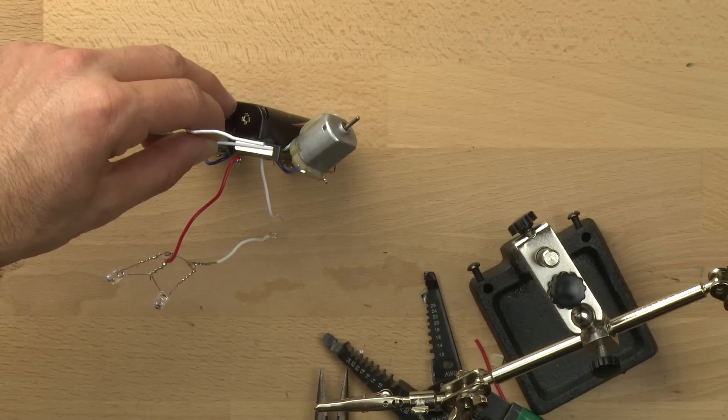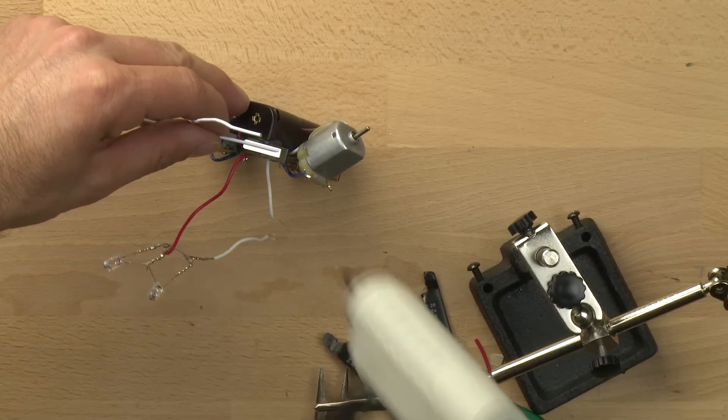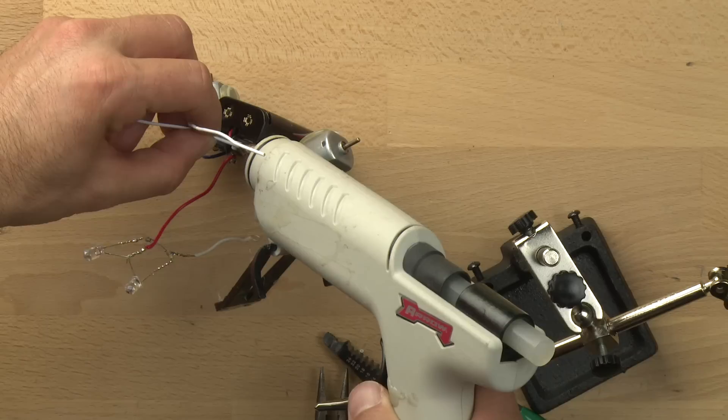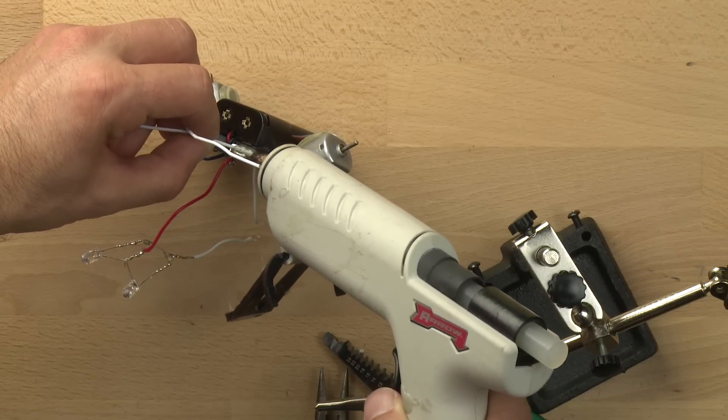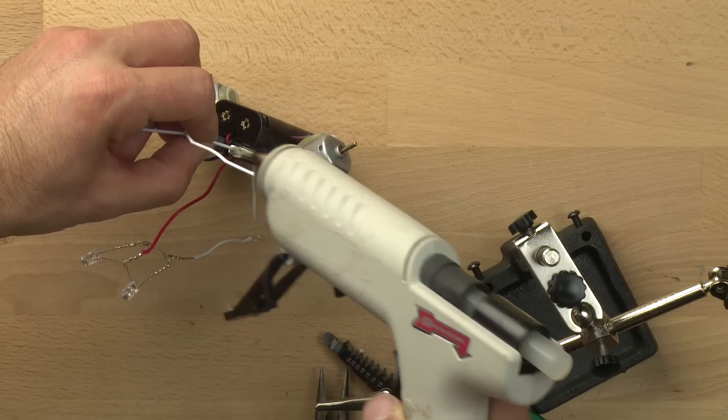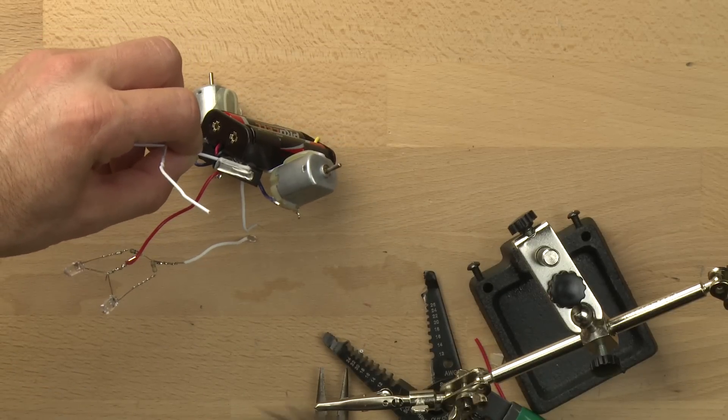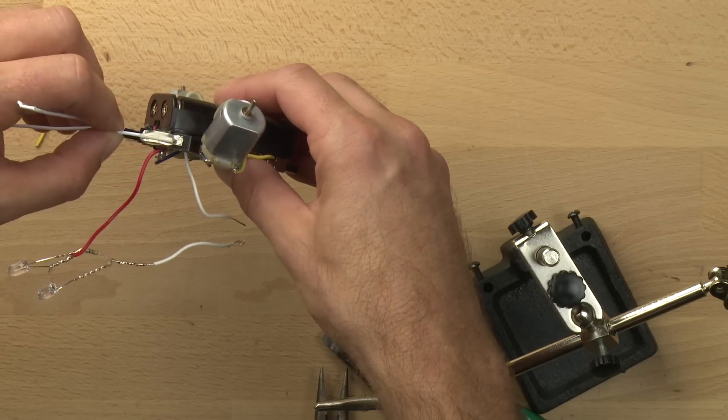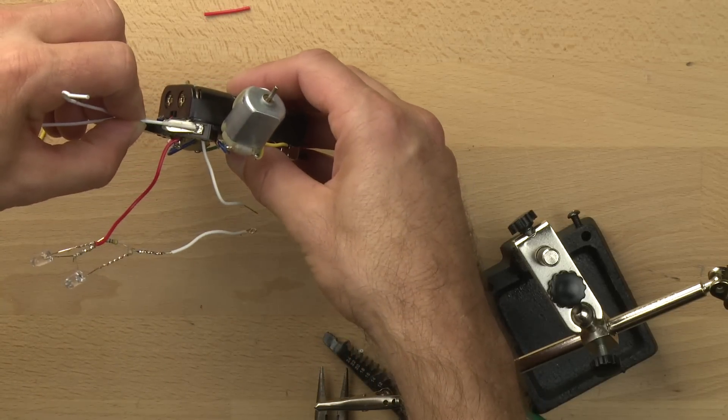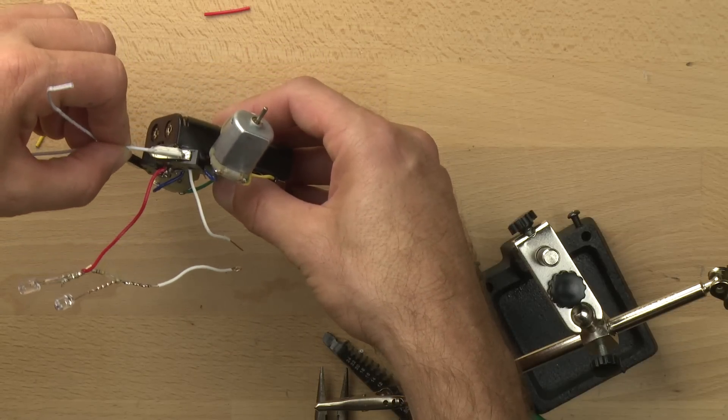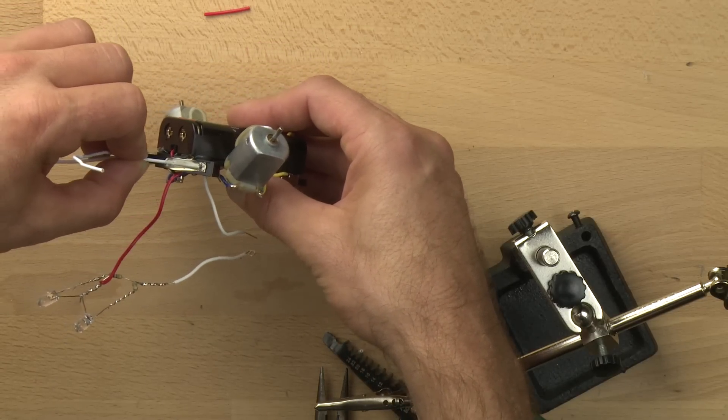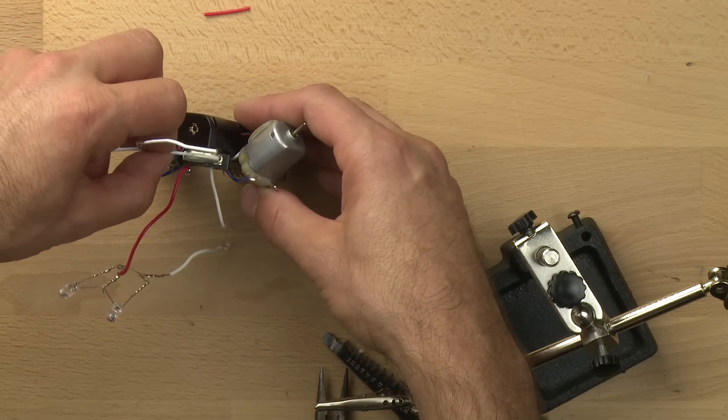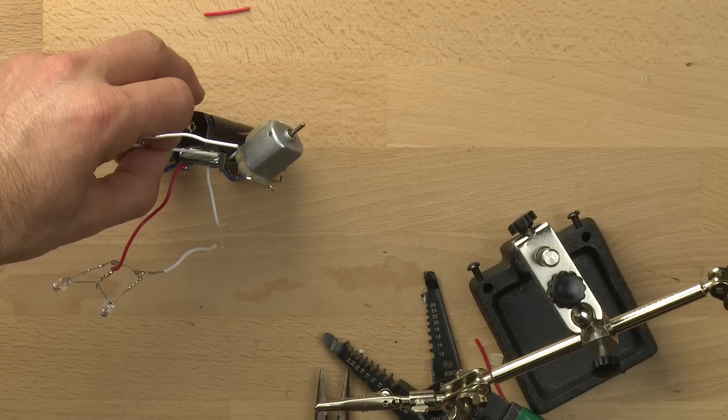And now we're just going to do the same thing for the other side. This part takes a fair amount of patience. It's OK if you spill a little bit of the hot glue, because you can cut it off later. But it is important to hold that antenna still.